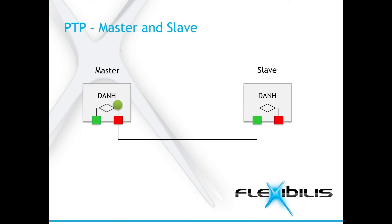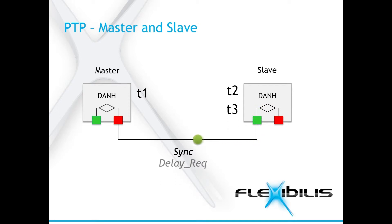This is how the master and the slave work. The master tells its current time with the sync message, giving it a timestamp as it leaves the node. The slave timestamps the sync message as it arrives. Then the slave sends the delay request message and timestamps it when it leaves. The master timestamps the delay request message when it arrives. Then the master sends this timestamp to the slave with the delay response message. After this, the slave can calculate the path delay, then adjust its clock based on the sync messages and the path delay it just calculated. In short, the master distributes the time information to all of the slaves. The slaves calculate the delay to the master and correct the time for themselves based on the delay and the time given by the master.